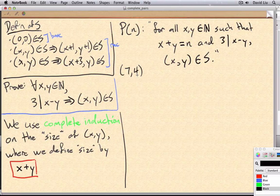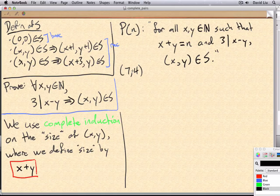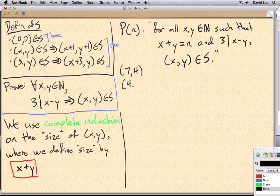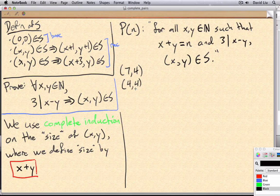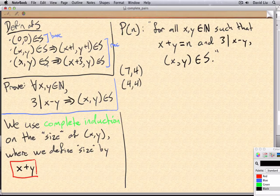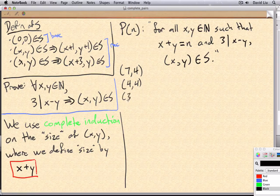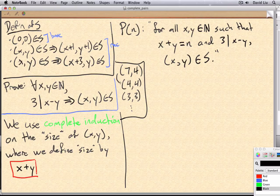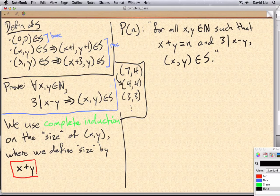And to show that 7,4 was in S, we looked at the sequence of recursive rules. So for example, 4,4 by going backwards from the second rule, and then 3,3, etc. And this sort of working backwards idea, well that was induction.